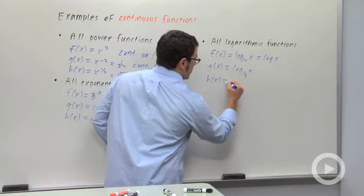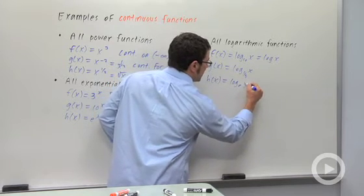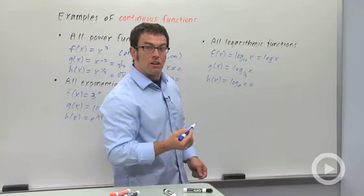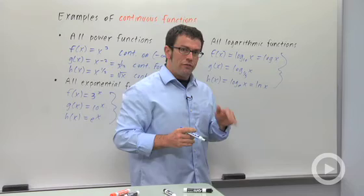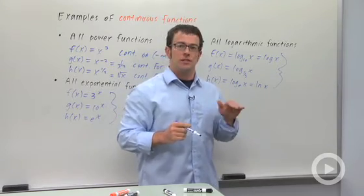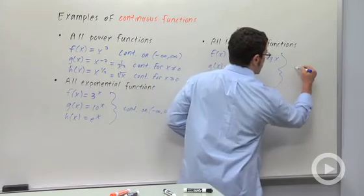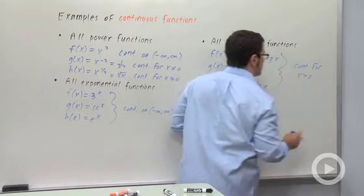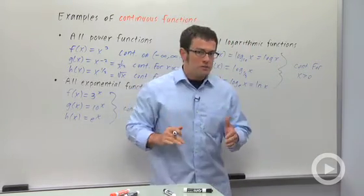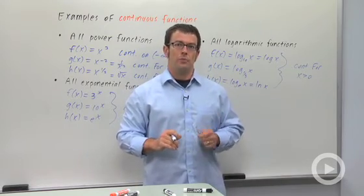And log base e of x, that's the natural log of x, ln(x). All three of these are defined only for positive values of x, and that's where they're continuous. They're continuous for x > 0. So once again, a continuous function is a function that's continuous at every point in its domain.